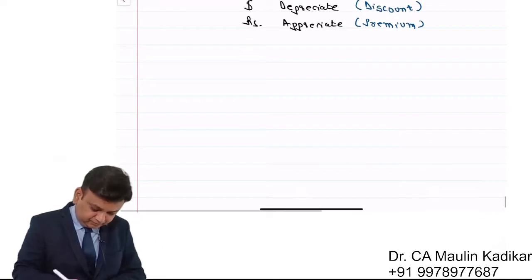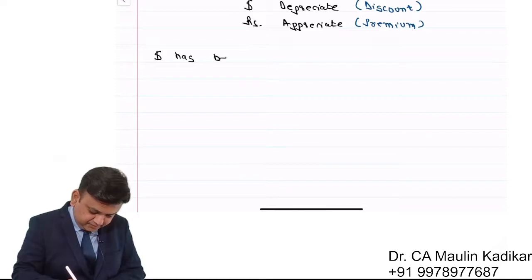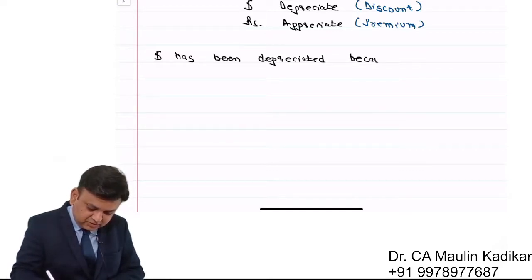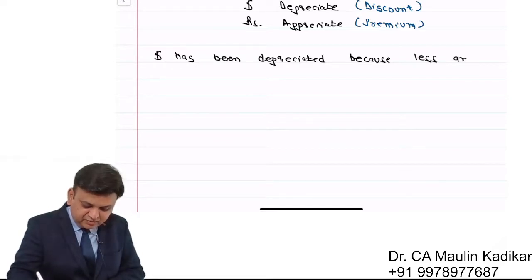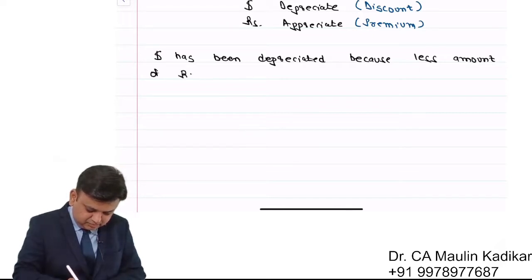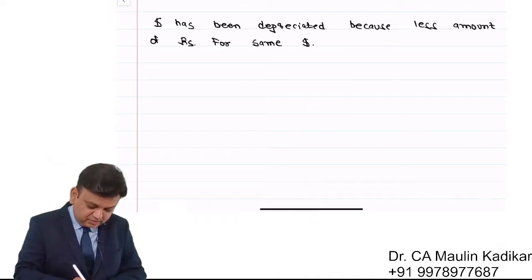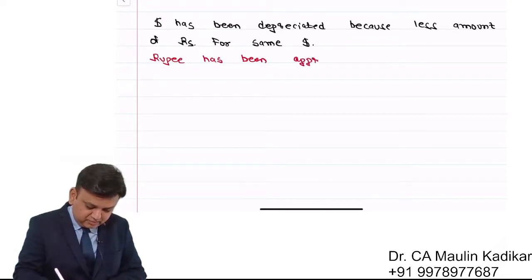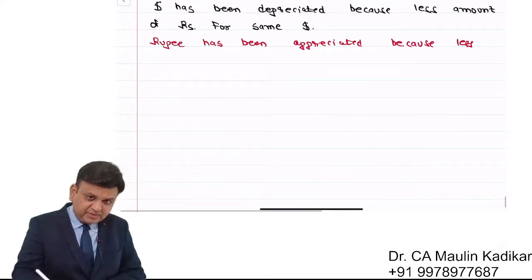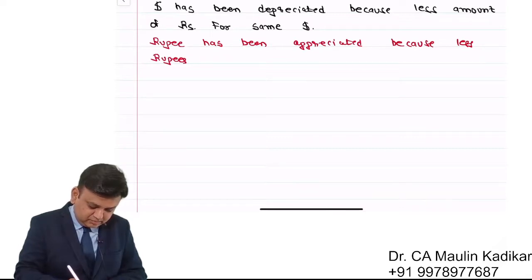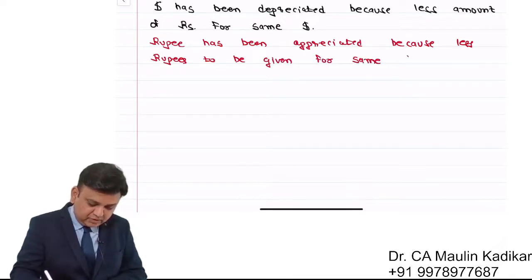Dollar currency has been depreciated because less amount of rupees are received for the same dollar. Rupee has been appreciated because less rupees need to be given for the same dollar.